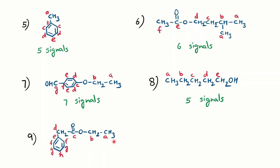In the next example, you can calculate: we have one, two, three, four carbons, and four signals for the aromatic ring — total eight signals for this molecule in C-13 NMR.